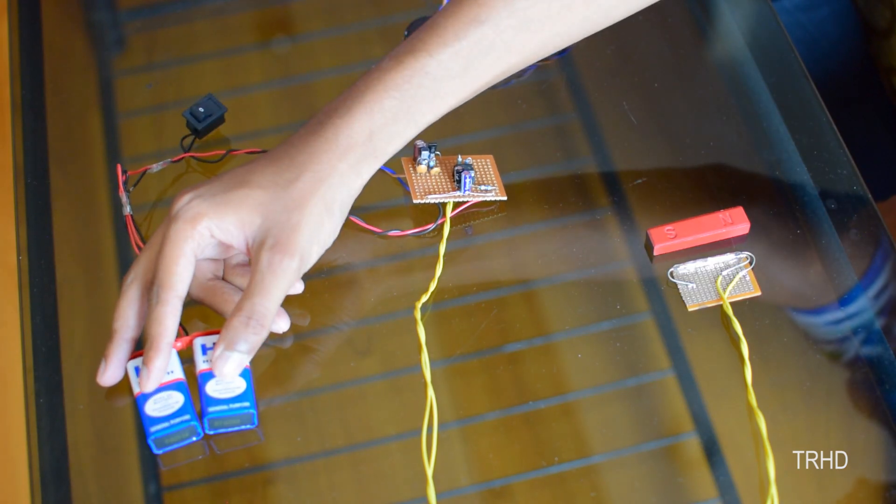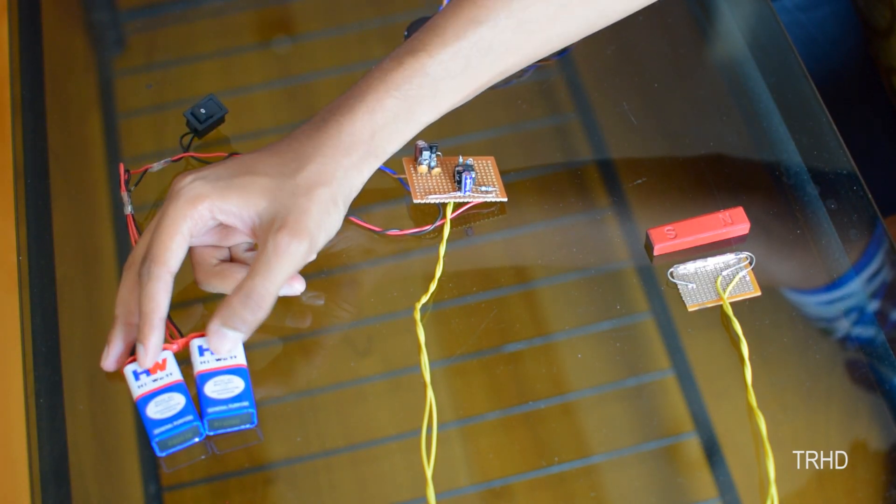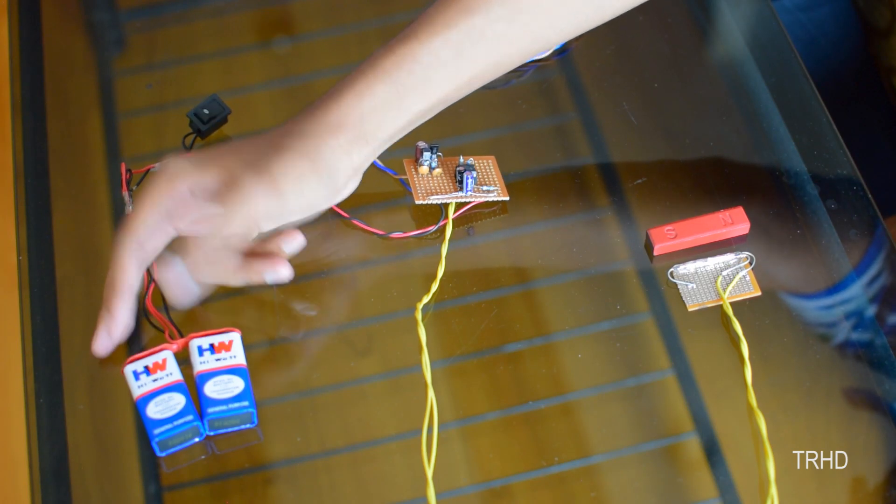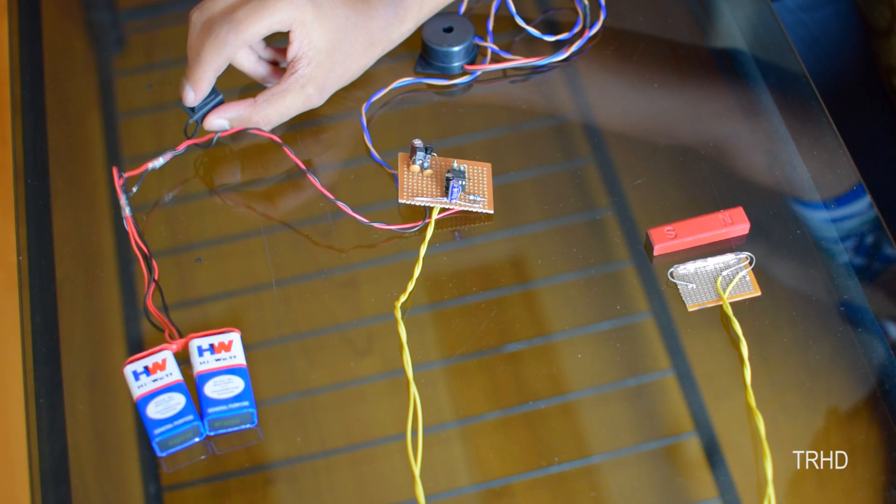I have used two 9-volt batteries to make the buzzer beep loudly. You can even use a single battery to lower the output of the buzzer. This on or off switch is used to reset the buzzer whenever it is triggered.